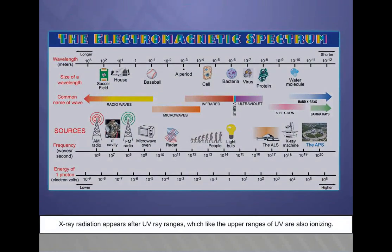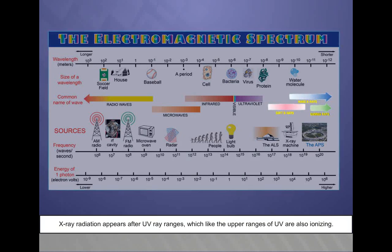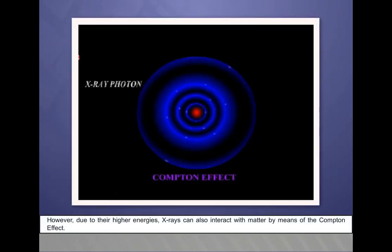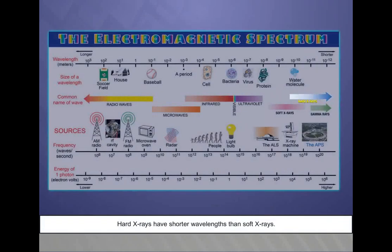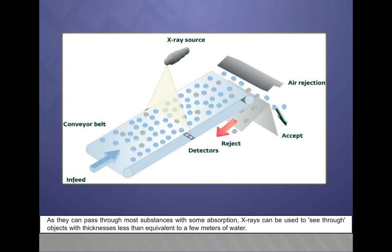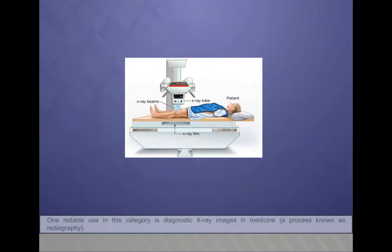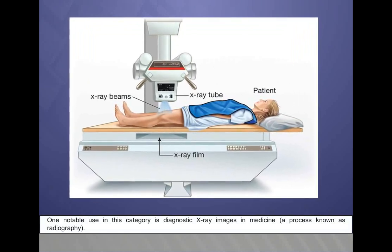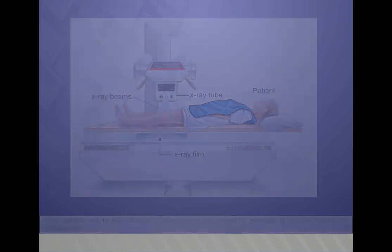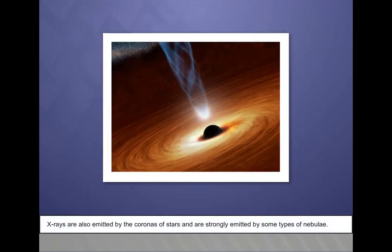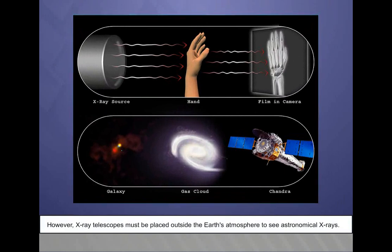X-ray radiation appears after UV ray ranges, which, like the upper ranges of UV, are also ionizing. However, due to their higher energies, X-rays can also interact with matter by means of the Compton effect. Hard X-rays have shorter wavelengths than soft X-rays. As they can pass through most substances with some absorption, X-rays can be used to see through objects with thicknesses less than equivalent to a few meters of water. One notable use in this category is diagnostic X-ray images in medicine, a process known as radiography. X-rays are also emitted by the coronas of stars and are strongly emitted by some types of nebulae. However, X-ray telescopes must be placed outside Earth's atmosphere to see astronomical X-rays.